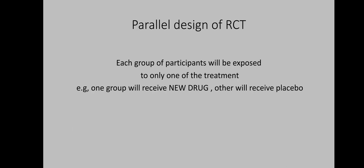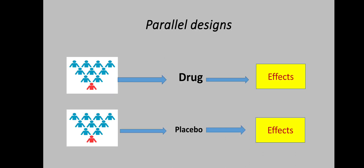Now let us discuss the designs of randomized control trials. One of the famous designs is the parallel design, in which each group of participants is exposed to only one of the treatments. For example, one group will receive the new drug and the other group will receive the placebo. This picture shows a parallel design of an RCT: Group A receives the drug only while Group B receives the placebo, and the effects of each are seen separately.